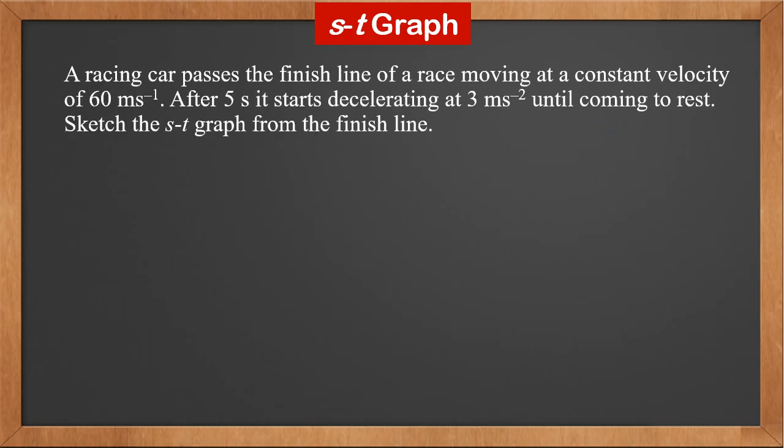A racing car passes the finish line of a race, moving at a constant velocity of 60 meters per second. After 5 seconds, it starts decelerating at 3 meters per second squared until coming to rest. Sketch the ST graph from the finish line.